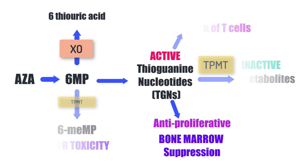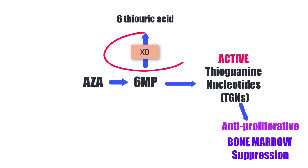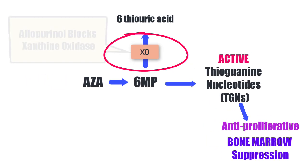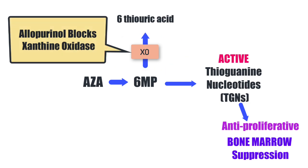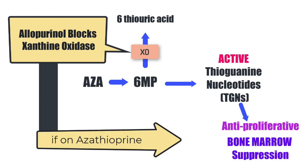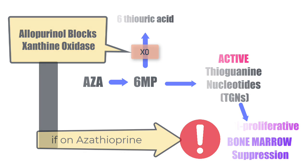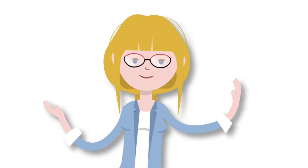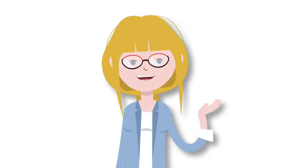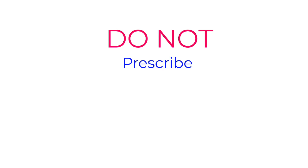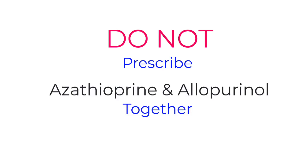Let's start with oxidation, performed by xanthine oxidase — the same enzyme that we block with xanthine oxidase inhibitors such as allopurinol. If we prescribe allopurinol to someone on azathioprine and make no dose adjustments at all, we could literally kill that patient. This drug interaction has the potential to cause life-threatening bone marrow suppression. As far as teaching this goes: do not prescribe these drugs in combination.